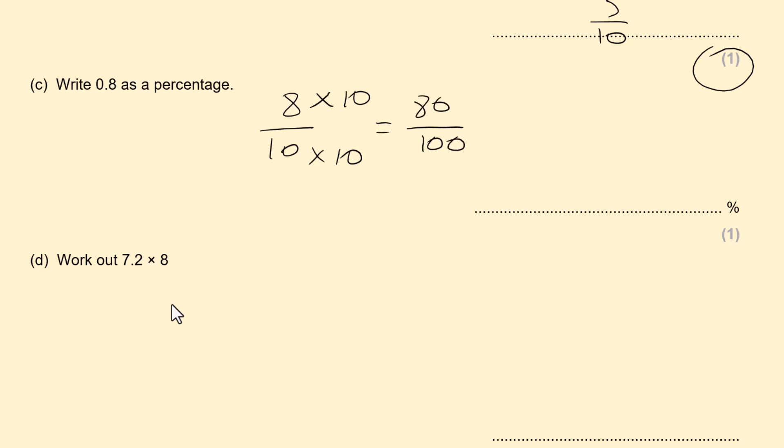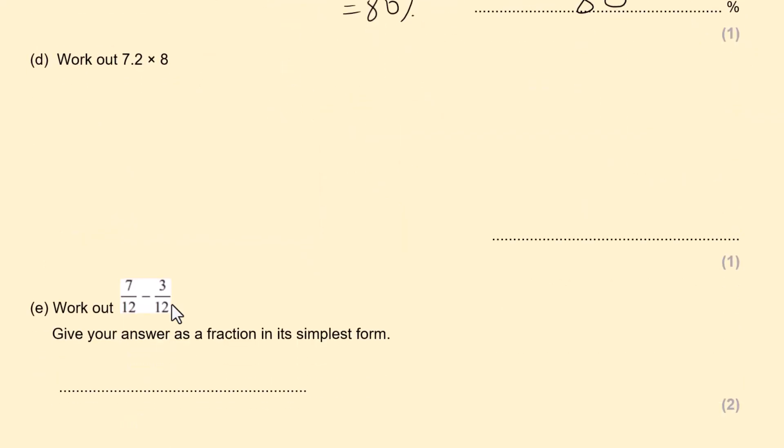That would be 80 out of 100 which is 80%. So the answer is 80%. Work out 7.2 times by 8. If you're not sure, do a column multiplication. 8 times 2 is 16, carry the 1. 7 times 8 is 56, add 1 is 57.